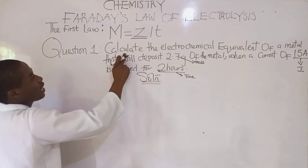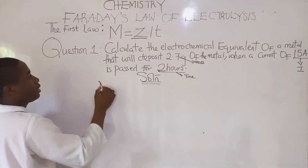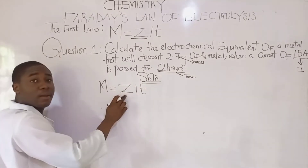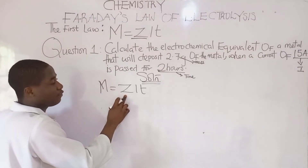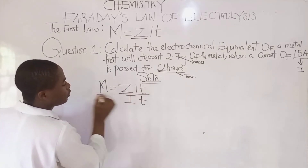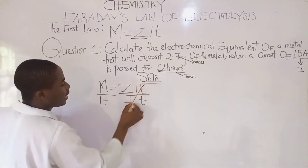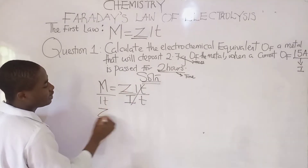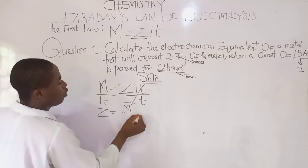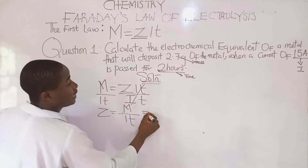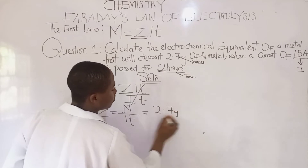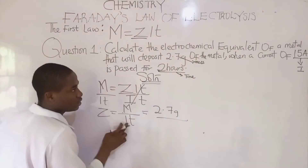Let's bring out the parameters. We write the formula as mass is equal to ZIT. Making Z the subject of the formula — the electrochemical equivalent — we divide both sides by IT. So IT cancels IT, and Z becomes mass over IT.